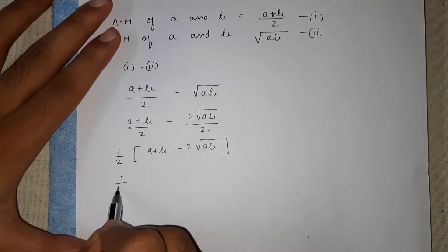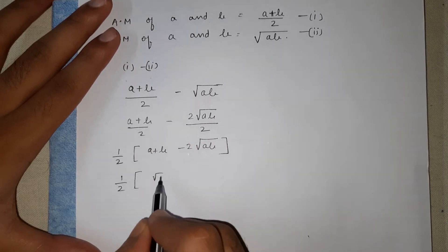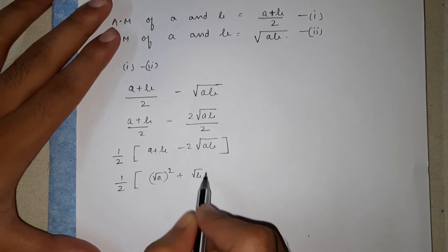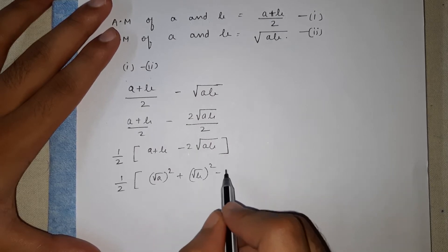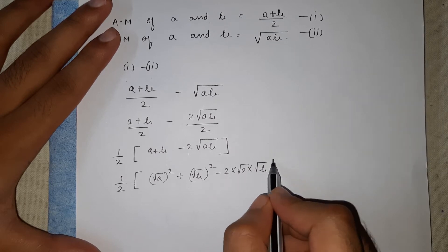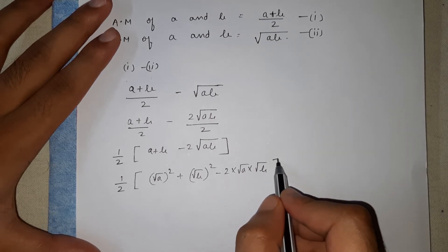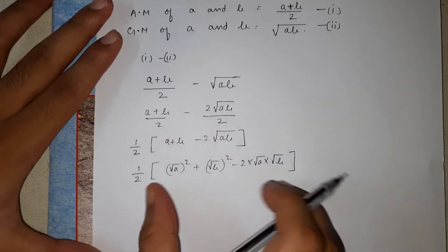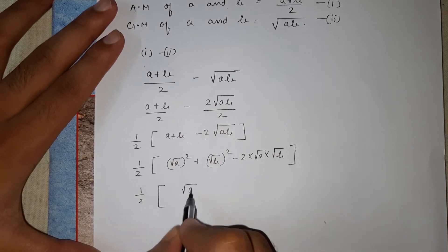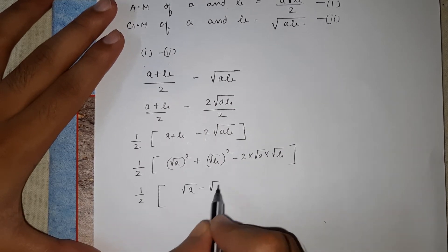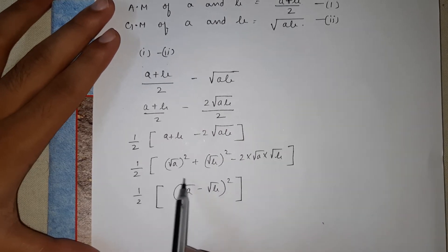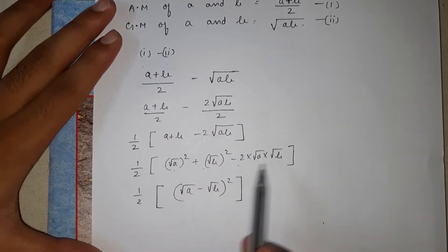Now, (a + b − 2√(ab)) can be understood as (√a)² + (√b)² − 2·√a·√b, which is nothing but (√a − √b)². So this part can be written as (1/2) × (√a − √b)².